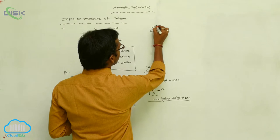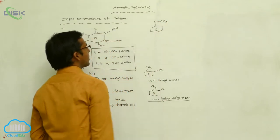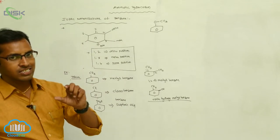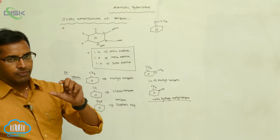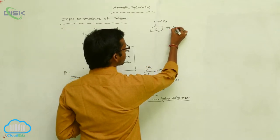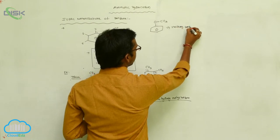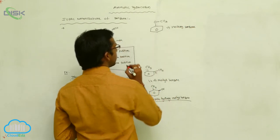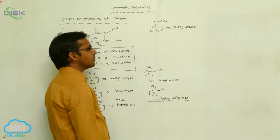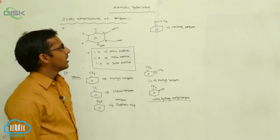If a methoxy group is written as the substituent — your methoxy group is an alkoxy group — the secondary prefix is alkoxy. The IUPAC name is methoxybenzene, commonly called anisole.